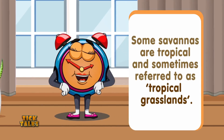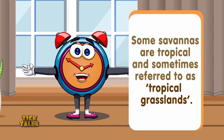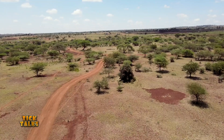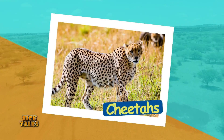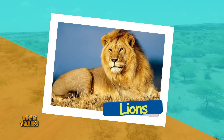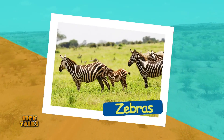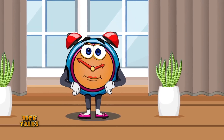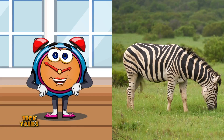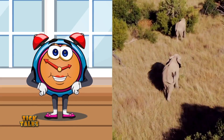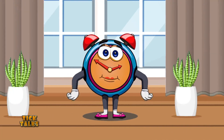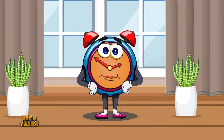Some savannahs are tropical and sometimes referred to as tropical grasslands. Some animals found in the savannah include buffaloes, cheetahs, elephants, giraffes, gazelles, hyenas, leopards, lions, ostriches, and even zebras! Savannahs play an important role in our planet's health. They are essential for maintaining biodiversity, serving as habitats for a vast array of wildlife, and they contribute to climate regulation, helping to stabilize the earth's temperature.